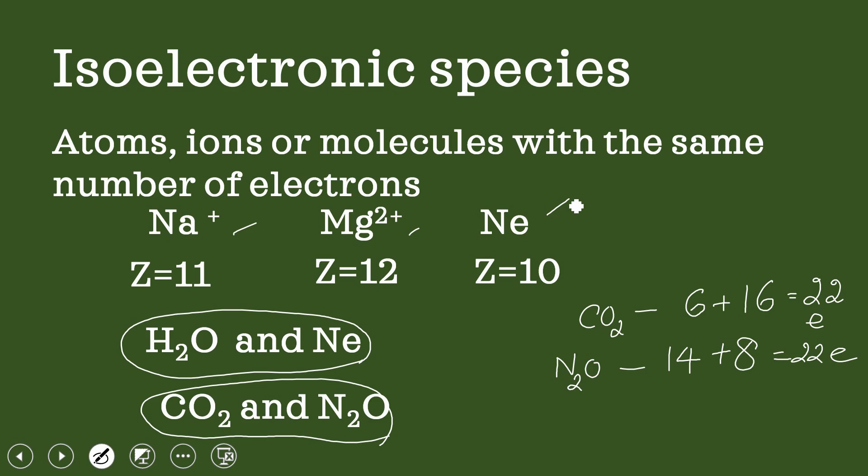Isoelectronic means having equal number of electrons for species: atom, ion, and molecule.